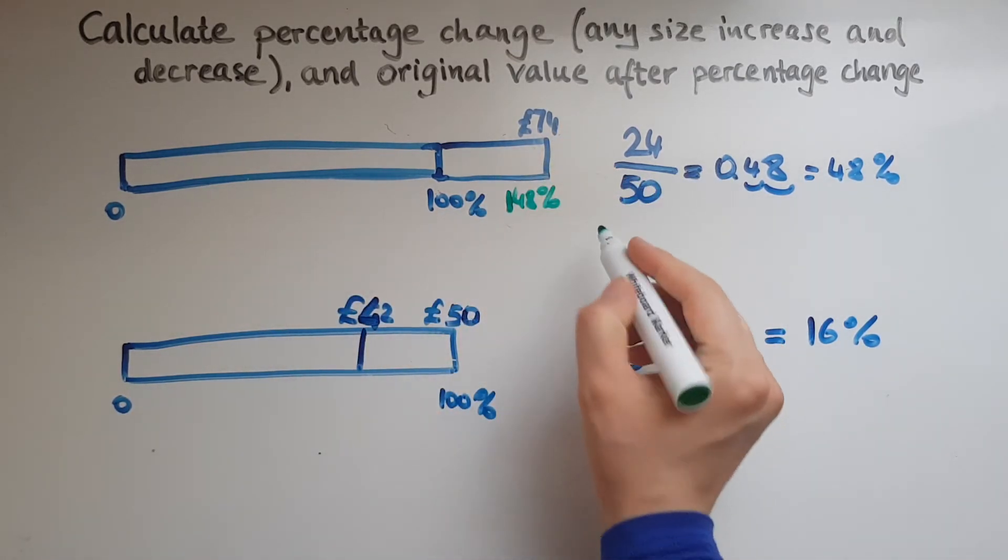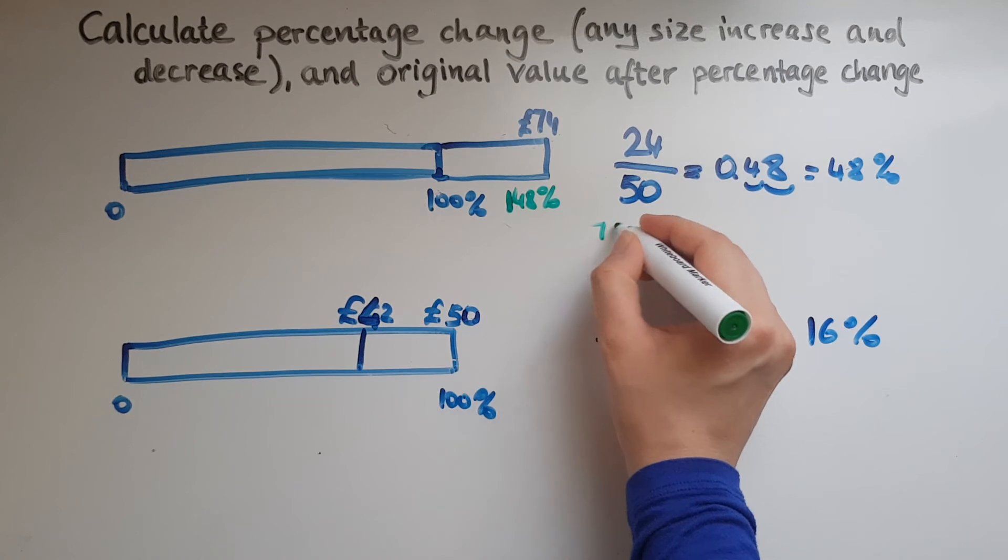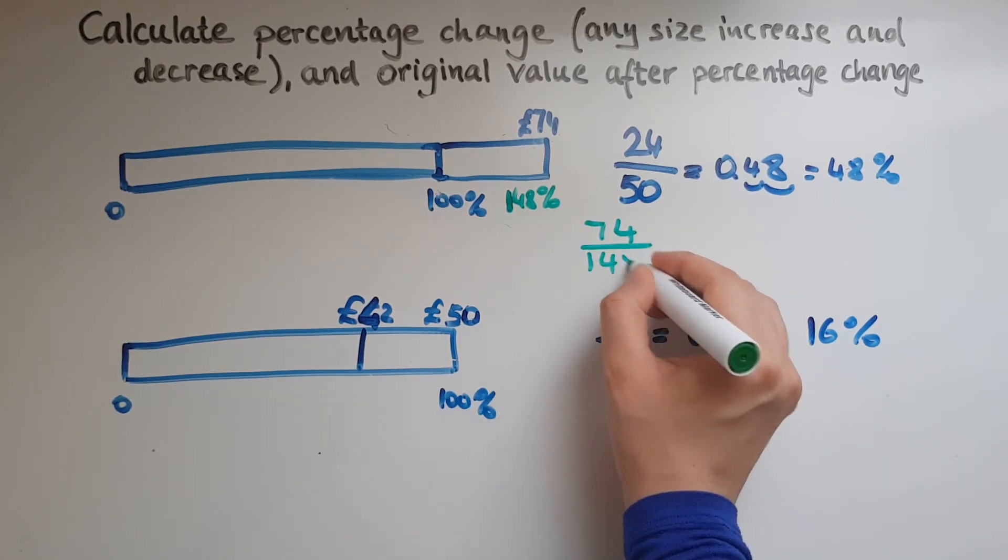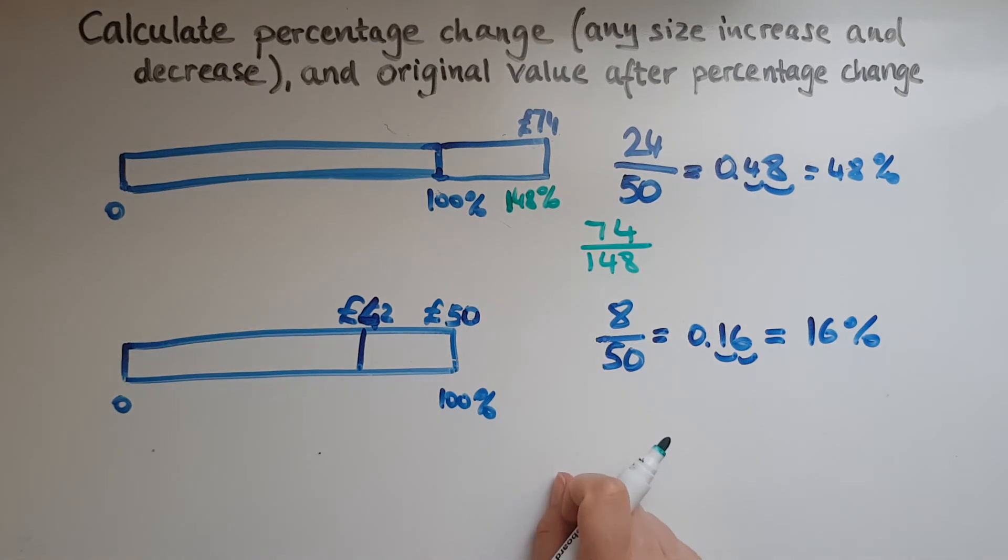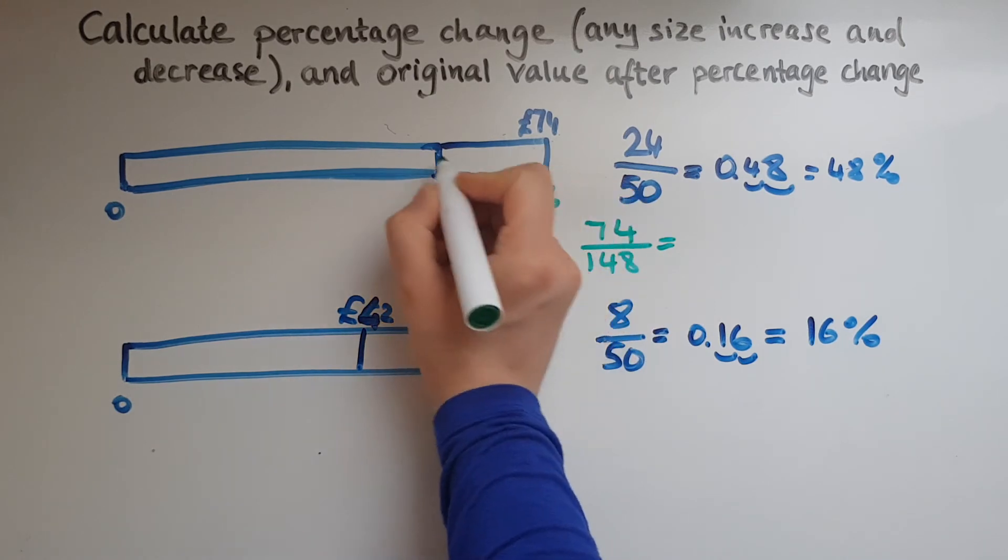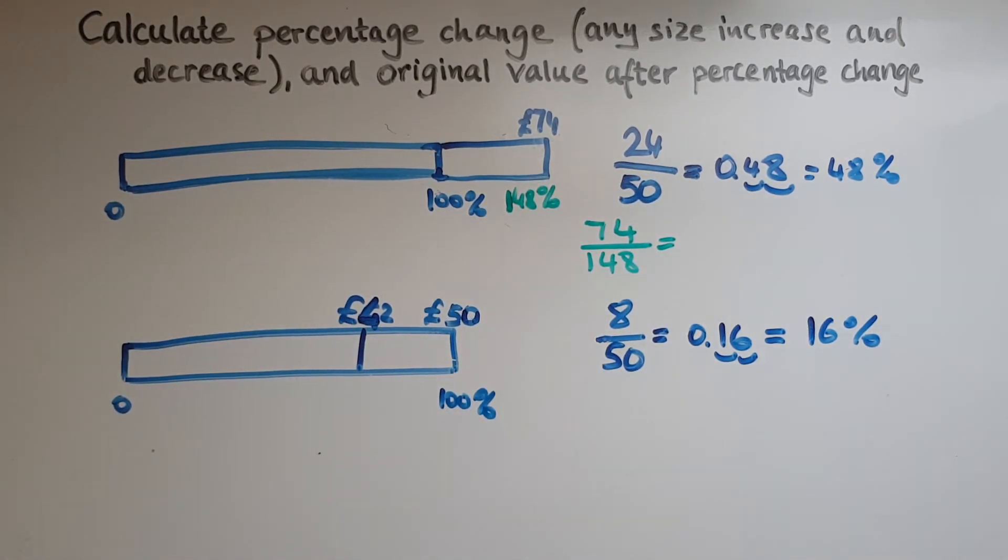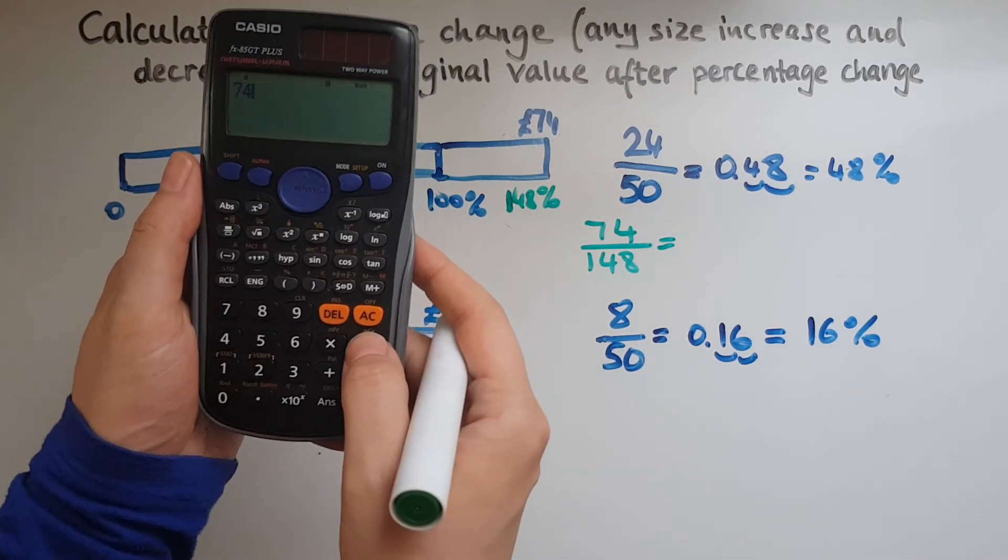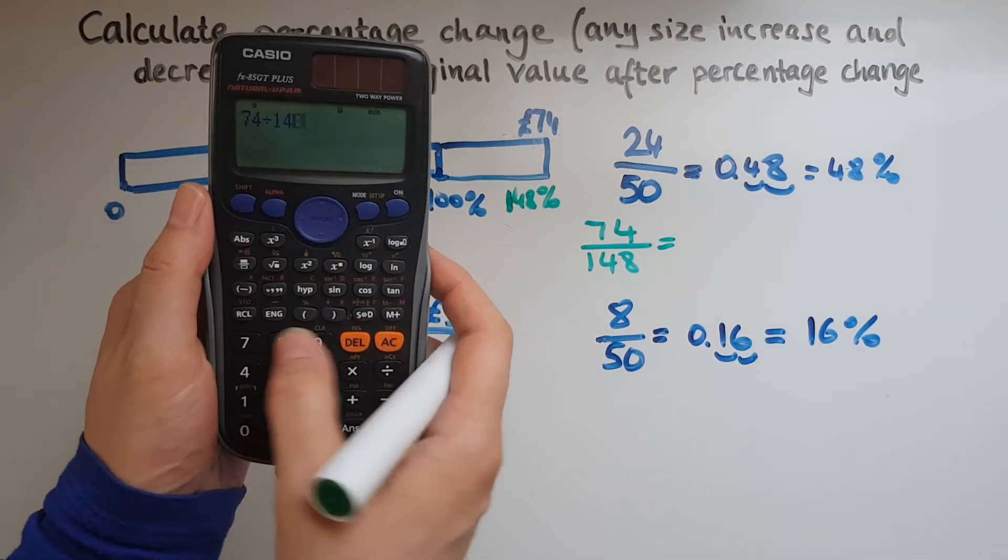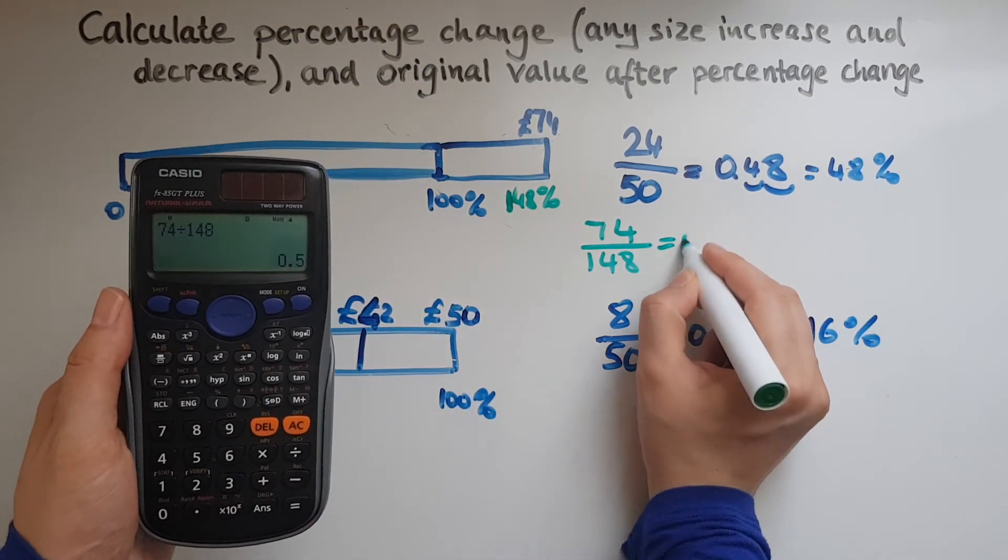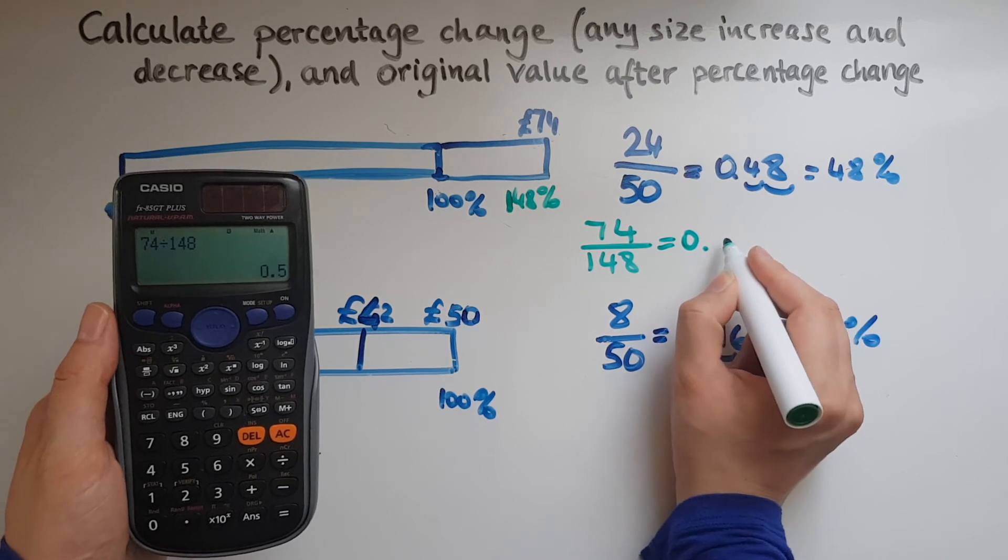So that's why I'm going to divide 74 by 148 to get 1%. One tiny amount, which could be here, could be there, anywhere, is the same. So 74 divided by 148 gives me 0.5.